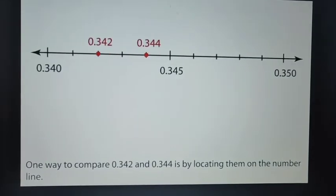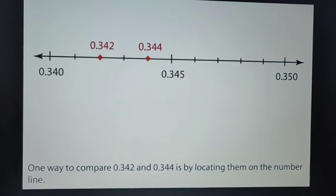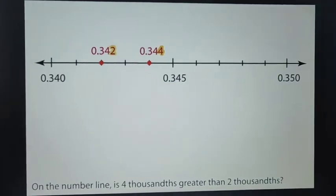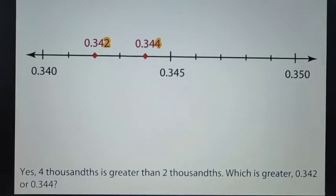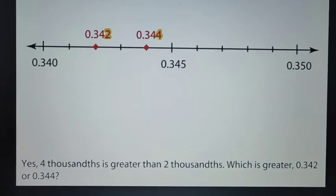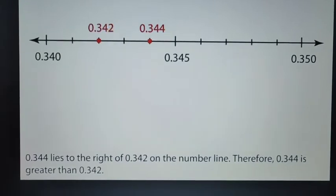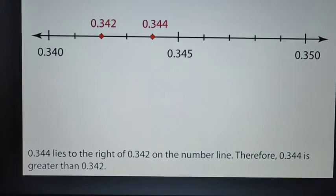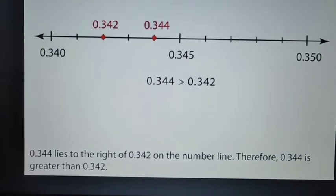One way to compare 342,000s and 344,000s is by locating them on the number line. On the number line, is 4,000s greater than 2,000s? Yes, 4,000s is greater than 2,000s. Which is greater, 342,000s or 344,000s? 344,000s lies to the right of 342,000s on the number line. Therefore, 344,000s is greater than 342,000s.